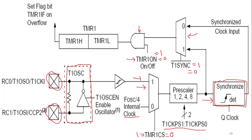The clock available at the output of the AND gate is connected to the timer registers. On every clock pulse, the values in TMR1L and TMR1H are incremented by 1, combining to give a 16-bit value. The lower register increments first; when it overflows, the higher register increments by 1. When both registers overflow, the timer overflows and this is indicated by the flag TMR1IF. This is the block diagram of Timer1 in the PIC microcontroller.